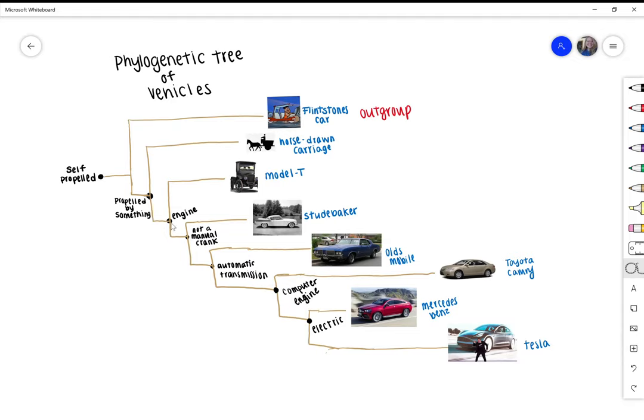The cars that are connected by the smallest branches are most closely related. So for example, the Tesla is most closely related to a Mercedes-Benz than it is to a Toyota Camry.